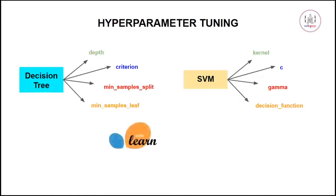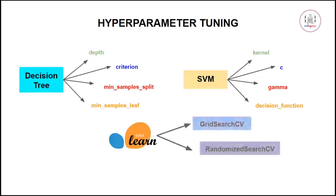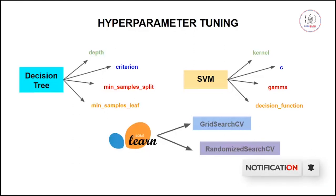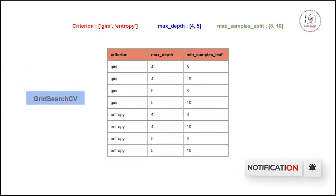That's why we use the scikit-learn package. In scikit-learn we have two main methods for this: grid search and randomized search. Let's say we have a decision tree and want to find the optimal value for criterion — Gini or entropy — then max depth of 4 or 5, and max sample split of 8 or 10. The process of finding this optimal value of these hyperparameters is known as hyperparameter tuning.